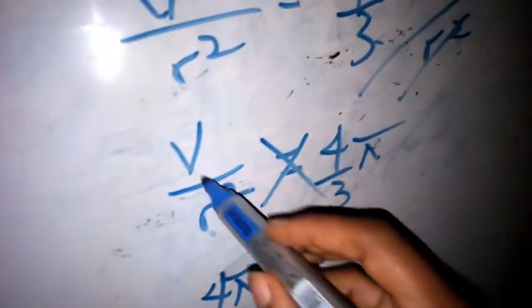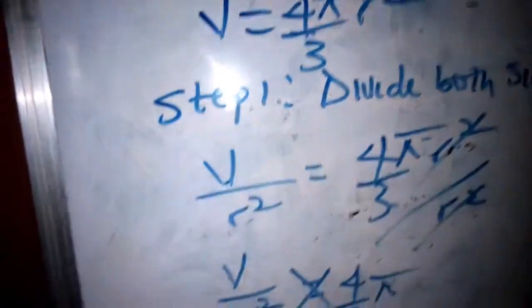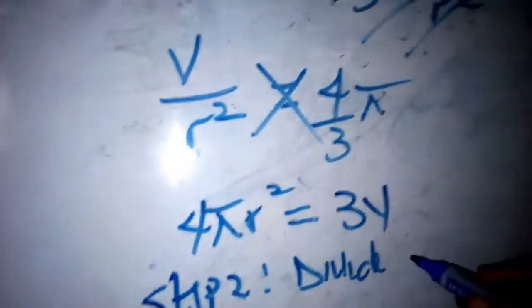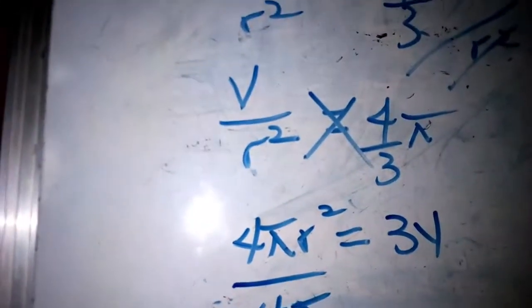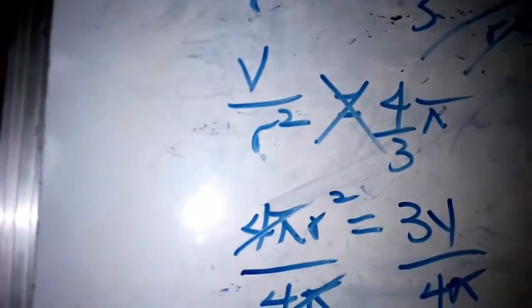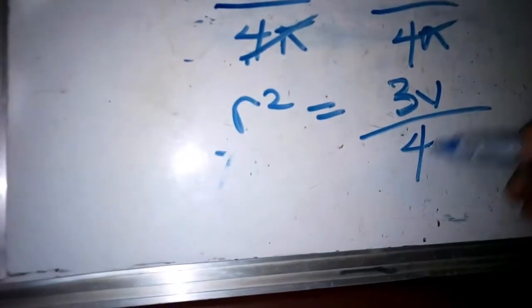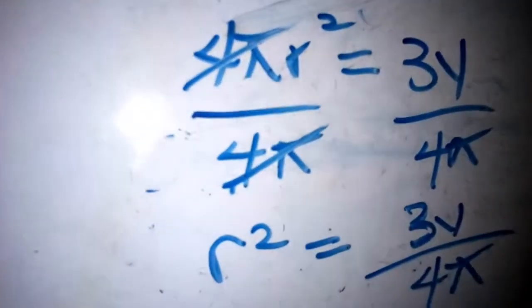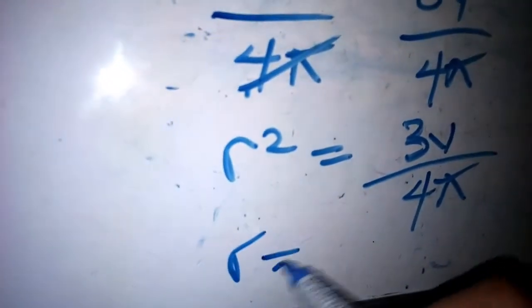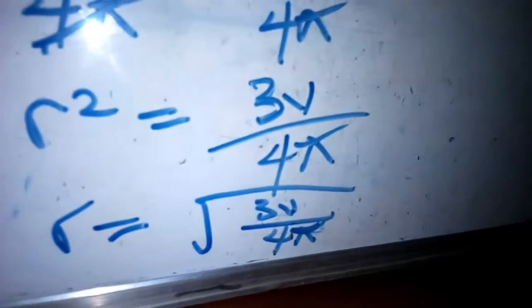We are looking for r, so step two: divide both sides by the coefficient of r squared, which is 4 pi. So 4 pi cancels 4 pi, leaving us with r squared equals 3V over 4 pi. Since we are left with r squared, we need to square root both sides. The final answer is r equals the square root of 3V over 4 pi.